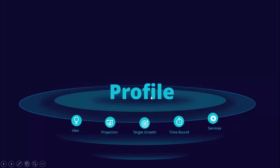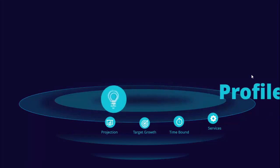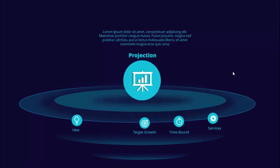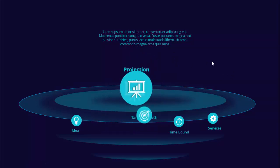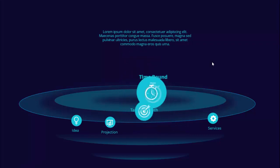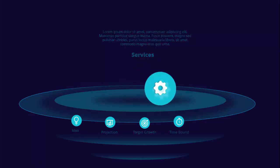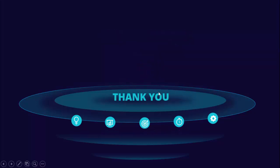When I click, it gives you the detail of each option. The idea comes to center stage and you can add some detailed text at the top. When I click again it goes back, then projection, target growth, time bound, and services each appear in turn. Depending on the requirement you can increase or decrease these options. The last slide is a thank you slide.